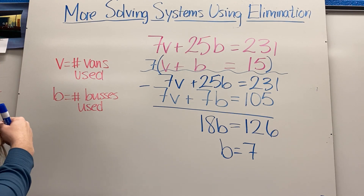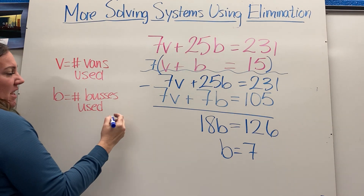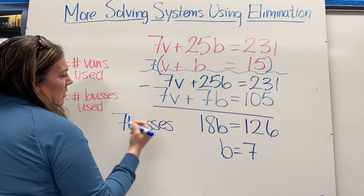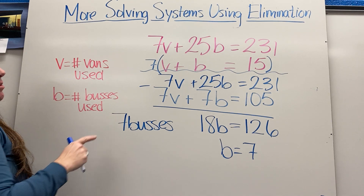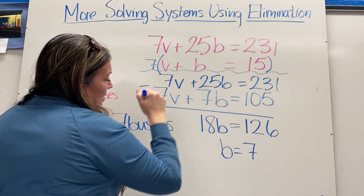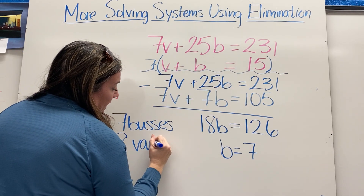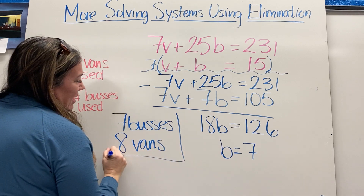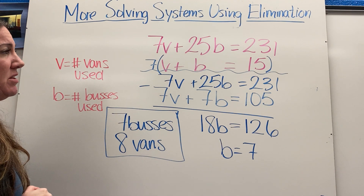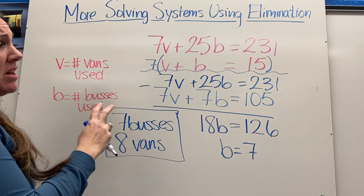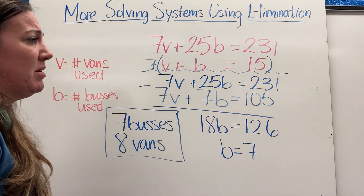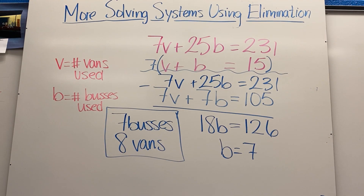In context, that means they used 7 buses. Going back to v plus b equals 15, if b equals 7, then they used 8 vans. This is why defining variables clearly and making sure your equations fit the situation are so important. We'll have a couple of these for you to practice today, along with more multiplying and manipulating. Enjoy!